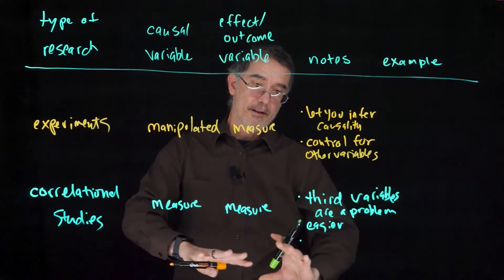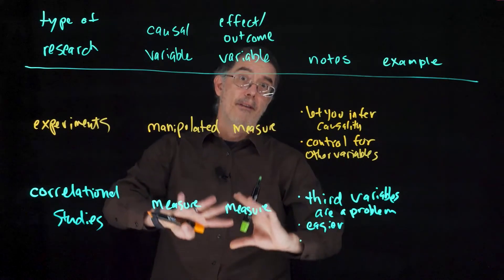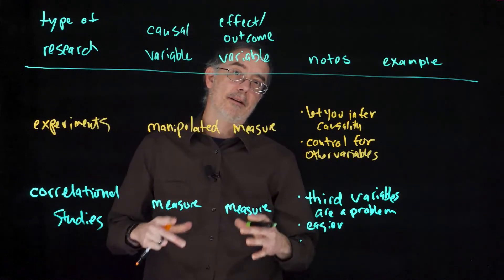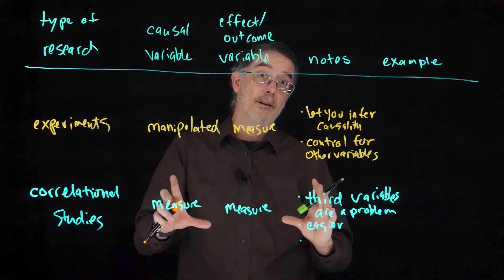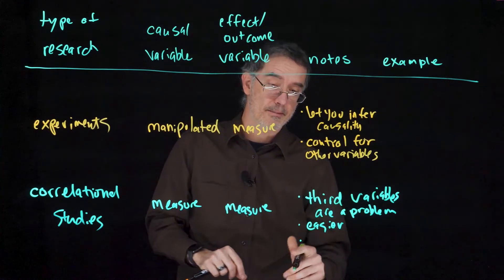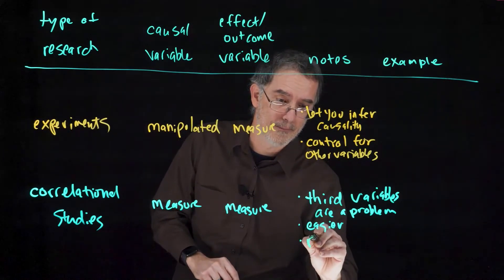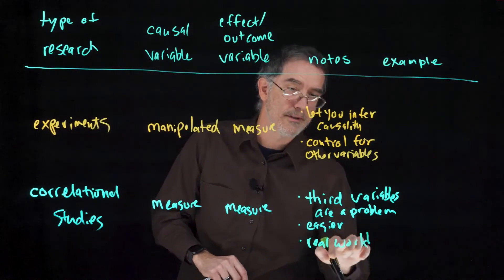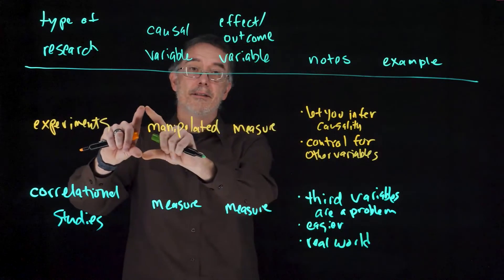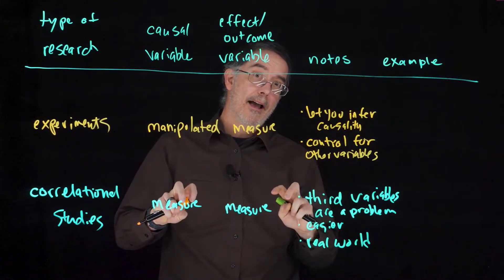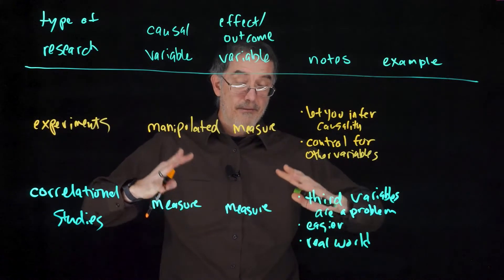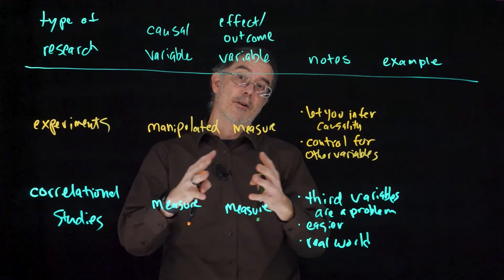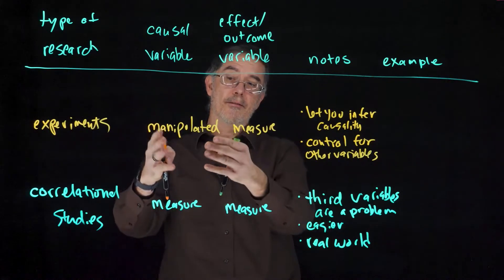If you do find that relationship, that is great, because you have demonstrated that it happens out in the real world. These correlational studies are nice because they let you find out if the relationship exists in the real world. These are more real-world data, whereas experiments tend to be more like in the lab — often artificial situations where the only thing that differs for your participants is whatever you are manipulating.